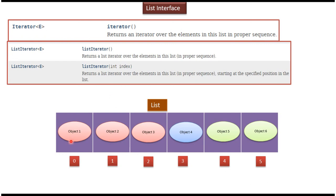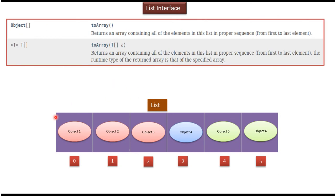Suppose I want to get each element from the list one by one. I can call the iterator() method, which returns an Iterator object, and use it to iterate through elements. Similarly, I can call listIterator(), which returns a ListIterator object for the same purpose. To convert the list to an array, I can call the overloaded toArray() methods, which return an array object.